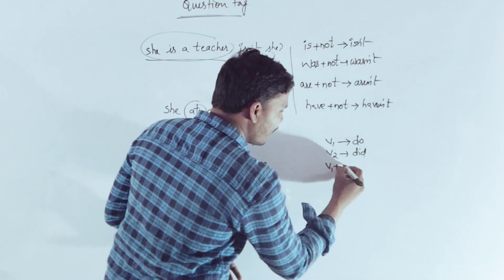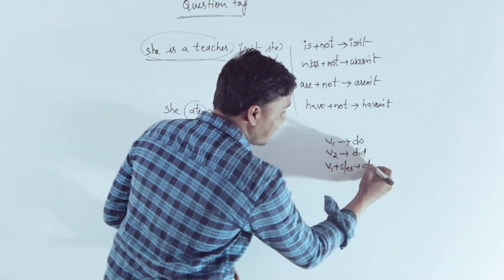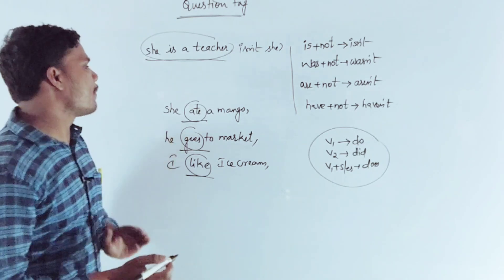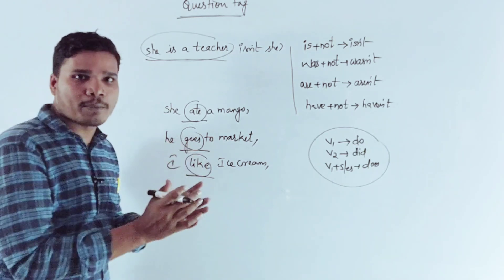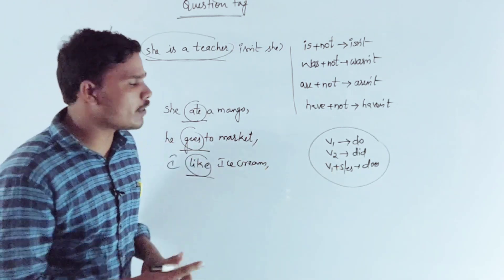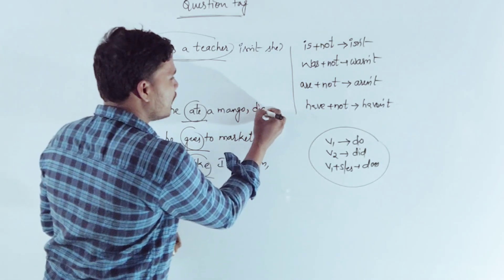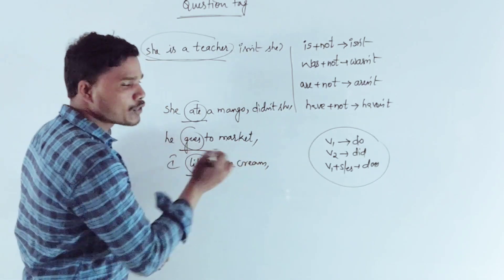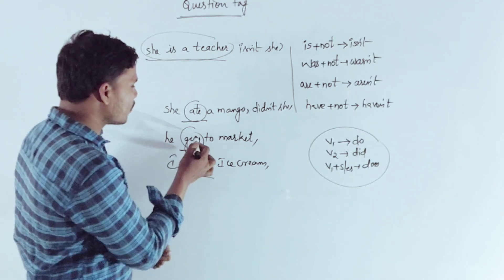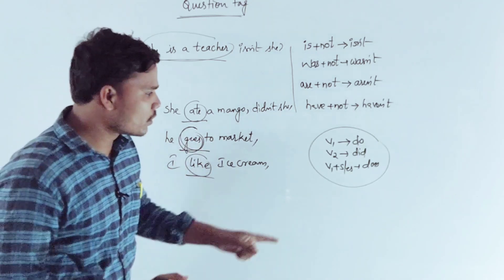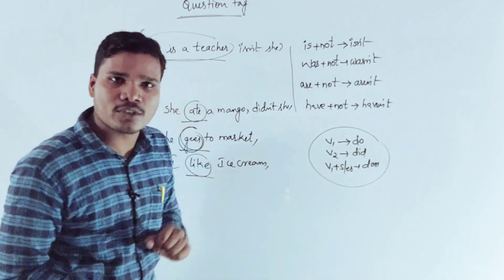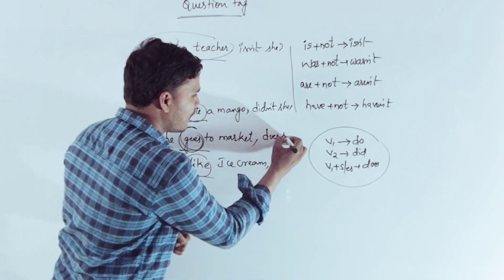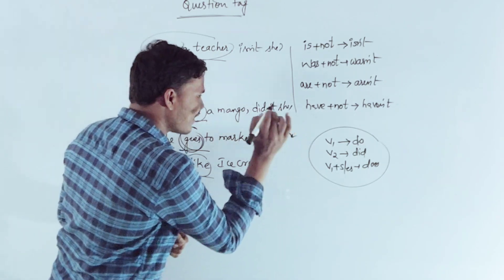If we don't have a helping verb — 'He goes to market' — 'goes' is V1, so we use a do-form. The question tag becomes 'doesn't he.'